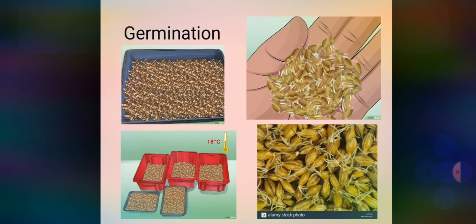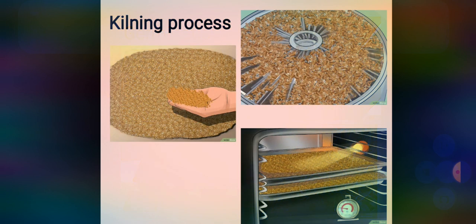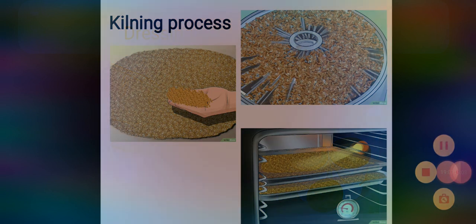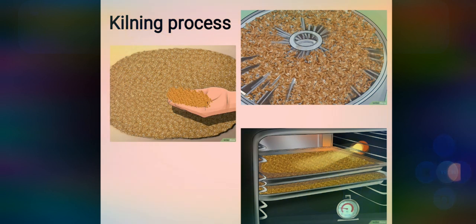After germination, the green malt is transferred from the germination vessel to the kiln until enzymatic activity is arrested. The grain malt is partly cooked. Kilning is an expensive process because it uses much fuel to generate heat to evaporate water from the grain. Hot air is generally fan-driven in the kiln. The final moisture content of malt is in the range of 2–5%.